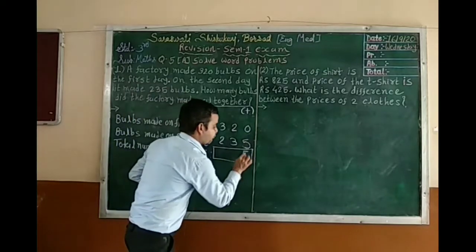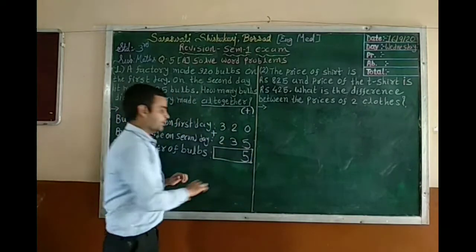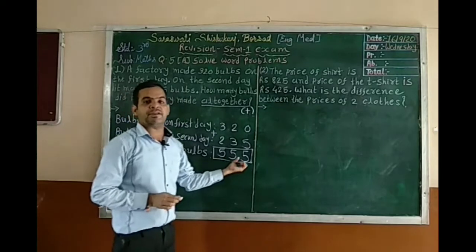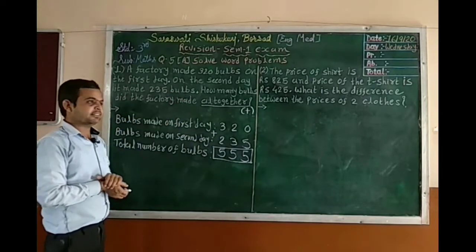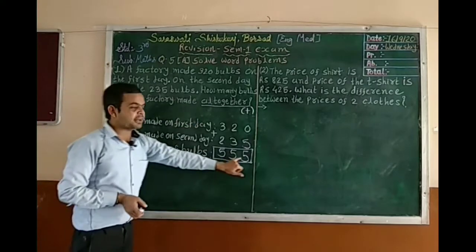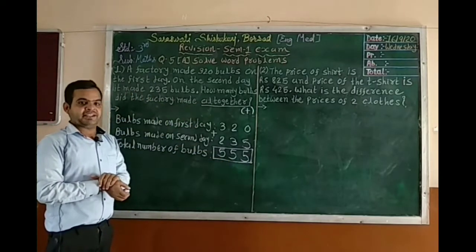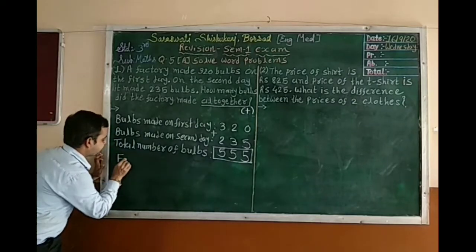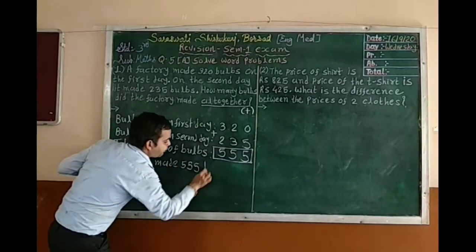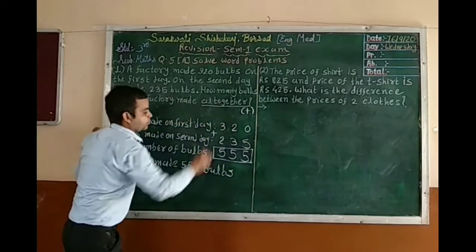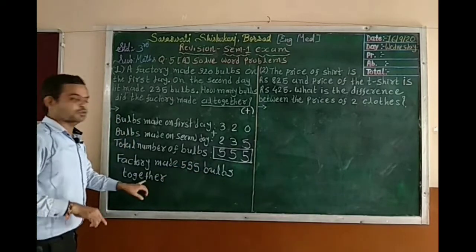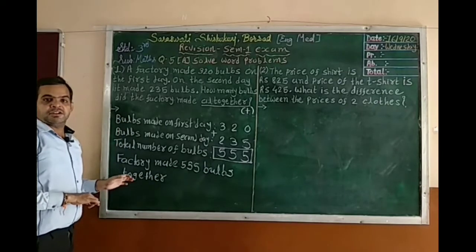0 plus 5 is 5. Then 2 plus 3 is 5. Then 3 plus 2 is 5. So here, 555 bulbs. How many bulbs did the factory make all together? The factory made 555 bulbs altogether. So you understood about the first word problem.